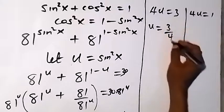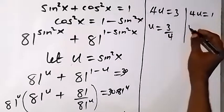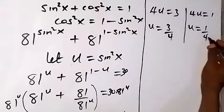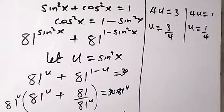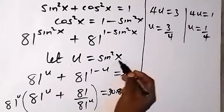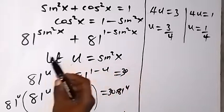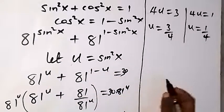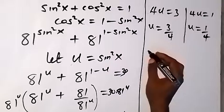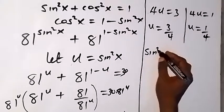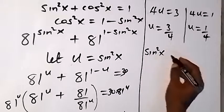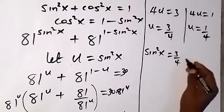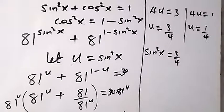Dividing both sides by 4, we get u equals 3/4 from the first case and u equals 1/4 from the second case. Recalling that u equals sin²x, we now substitute back: sin²x equals 3/4 or sin²x equals 1/4.